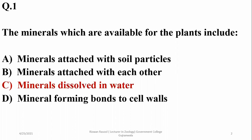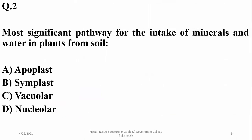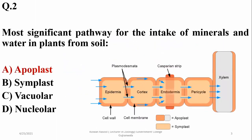The right option is Charlie. Minerals found attached to soil particles or having any bonding with cell walls are not absorbed from the water. For question two, the most significant pathway for uptake of minerals and water in plants from the soil is the apoplast pathway, because it is the simplest pathway with the least restrictions — movement along the cell wall is easiest and no membrane needs to be crossed up to the endodermis.